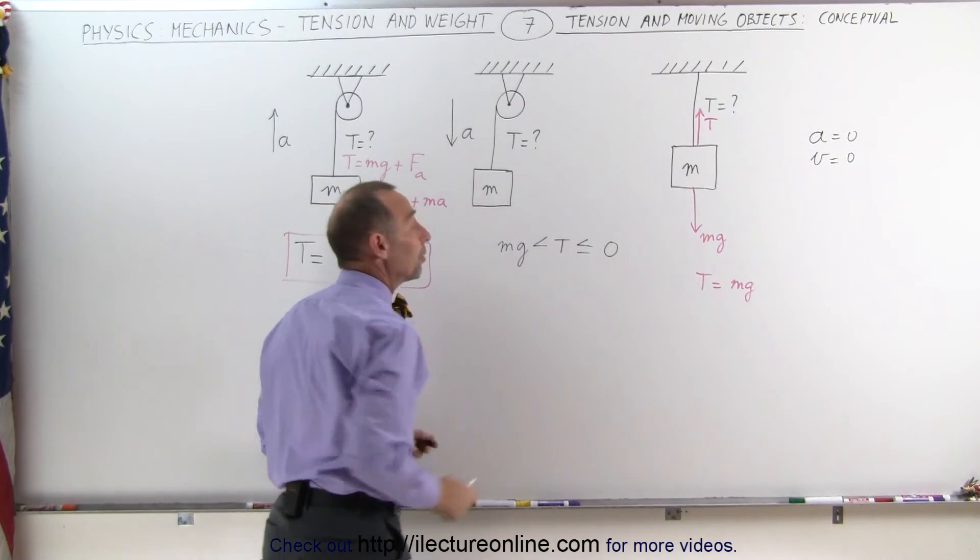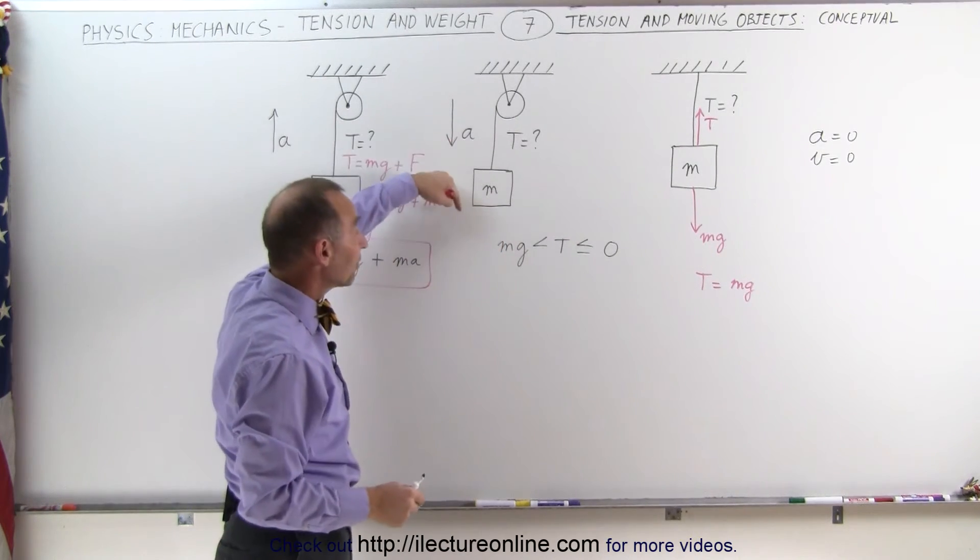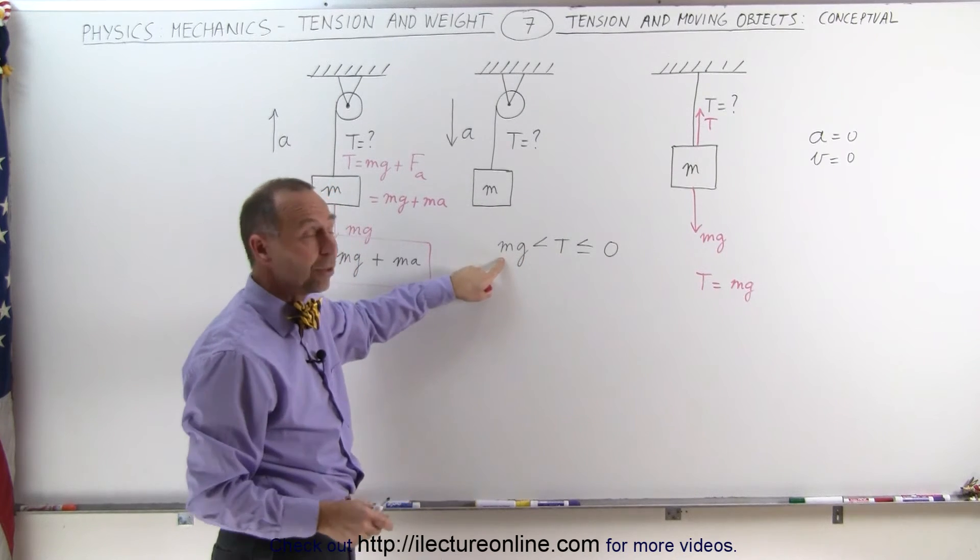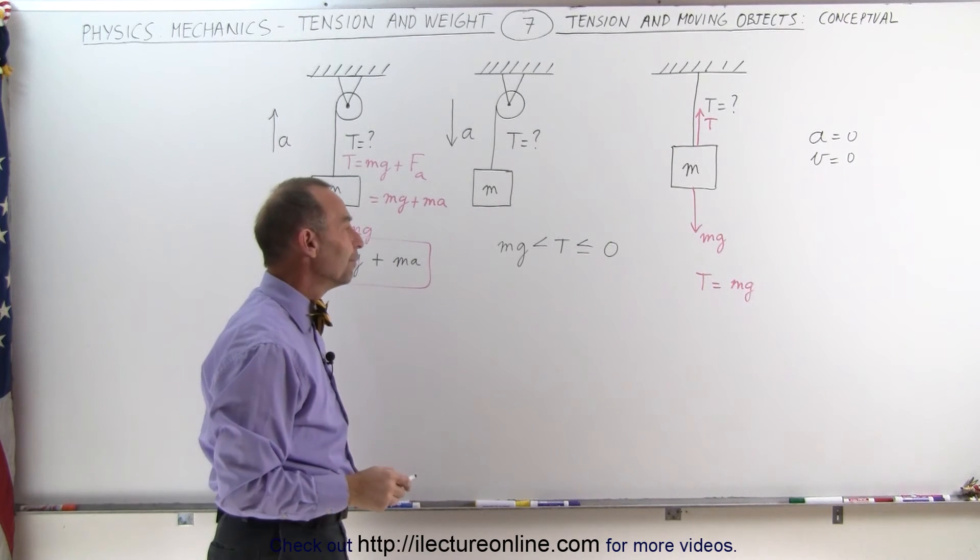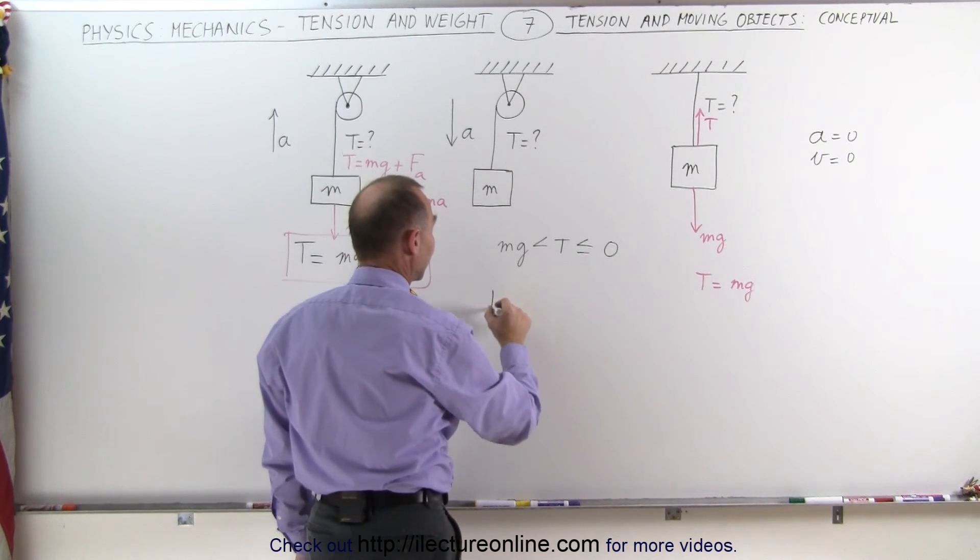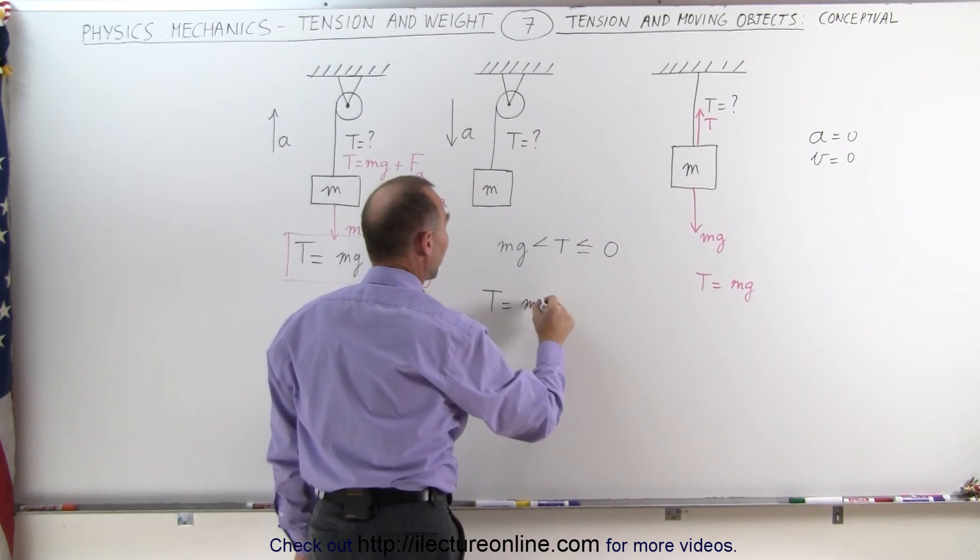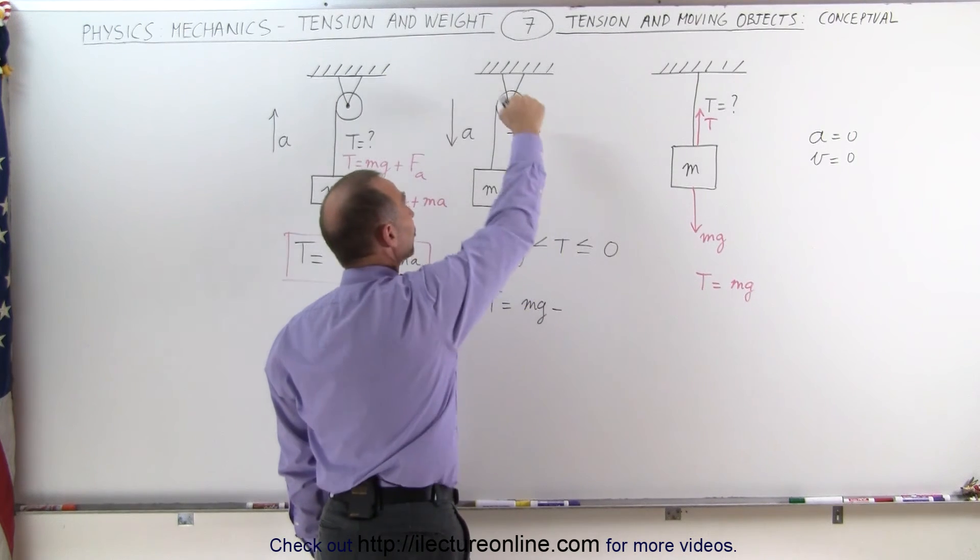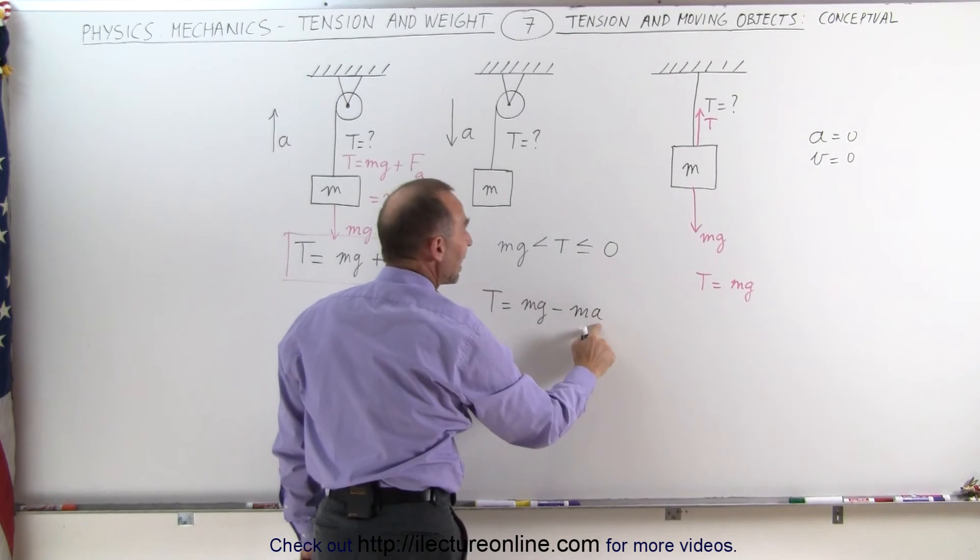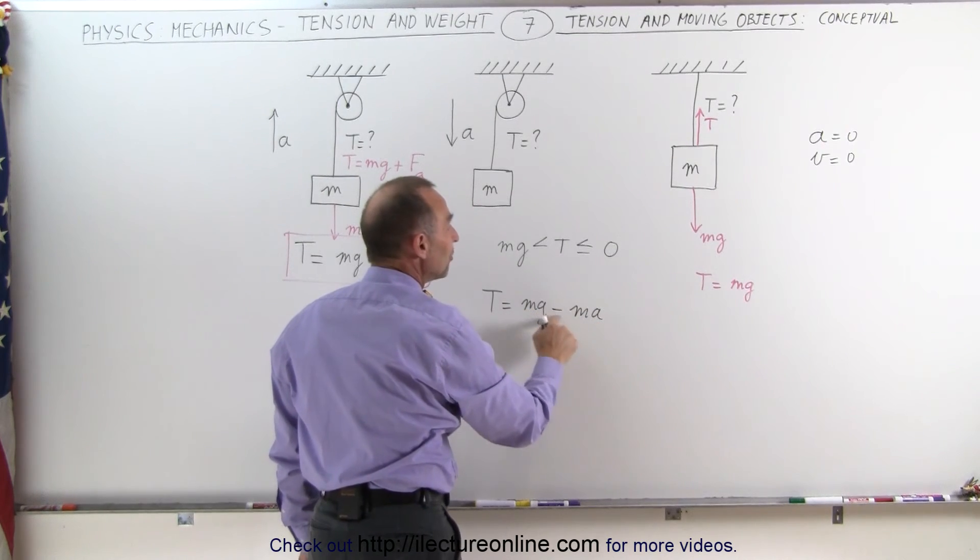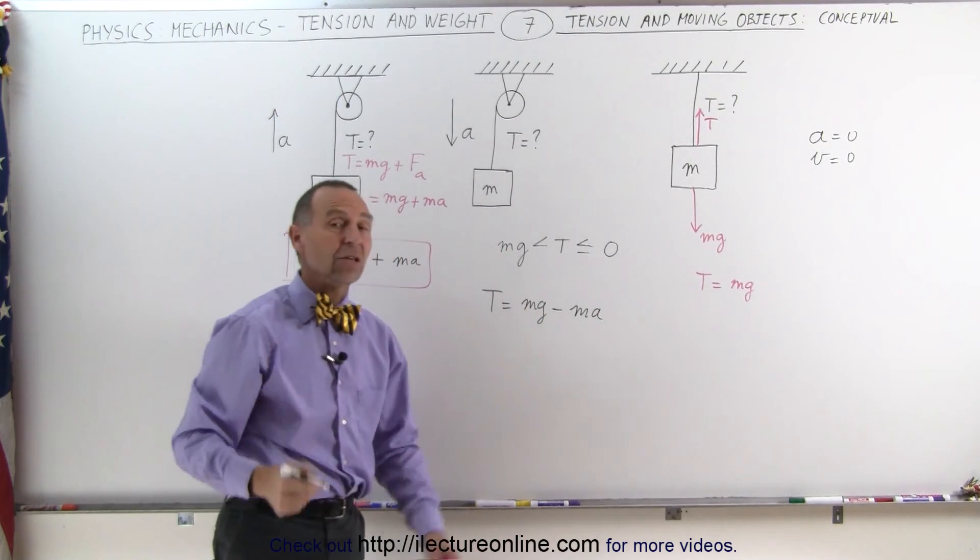And if I take this part away, then you know that if there's a negative acceleration, the tension must be less than the weight, and it can be as little as zero if the acceleration equals the acceleration due to gravity. Essentially, you can then say that the tension is equal to the weight of the object minus the force that requires the accelerated downward, which is MA. And if A becomes equal to G, then MG minus MA would be zero, and the tension would be zero.